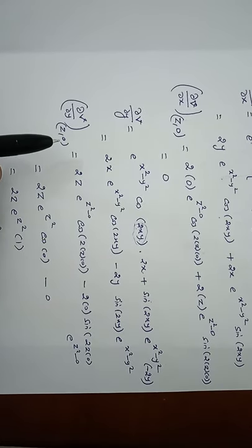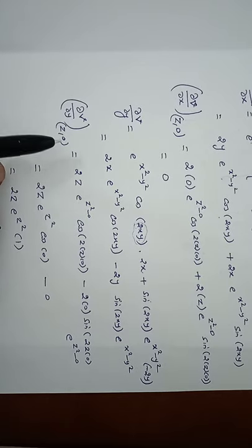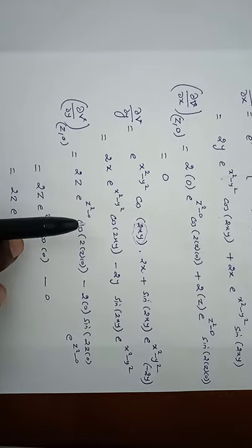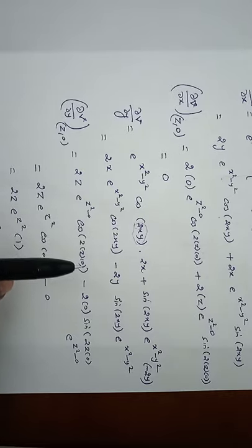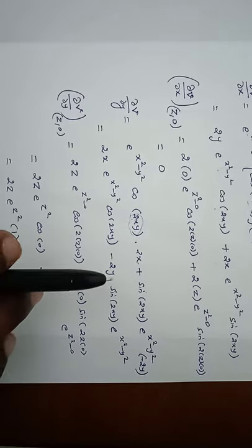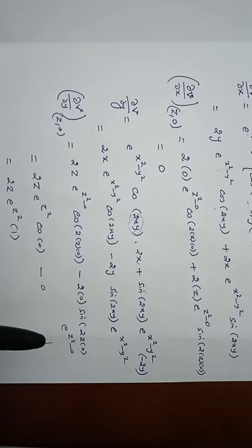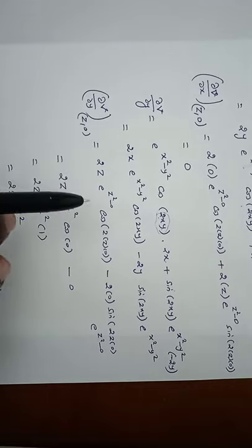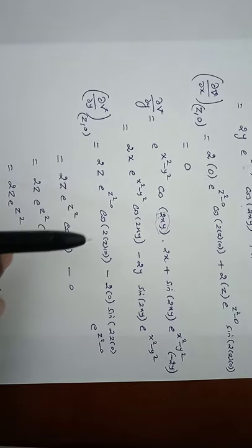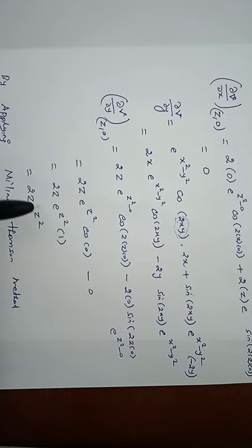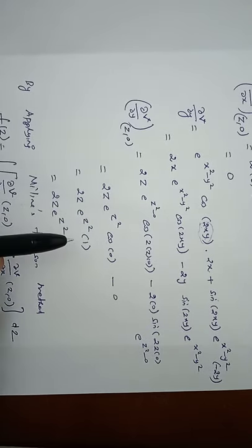Now applying x = z, y = 0 to ∂v/∂y: 2z·e^(z²−0)·cos(2z·0) − 2·(0)·sin(2z·0)·e^(z²−0). This simplifies to 2z·e^(z²)·cos(0), and since cos(0) = 1, the result is 2z·e^(z²).